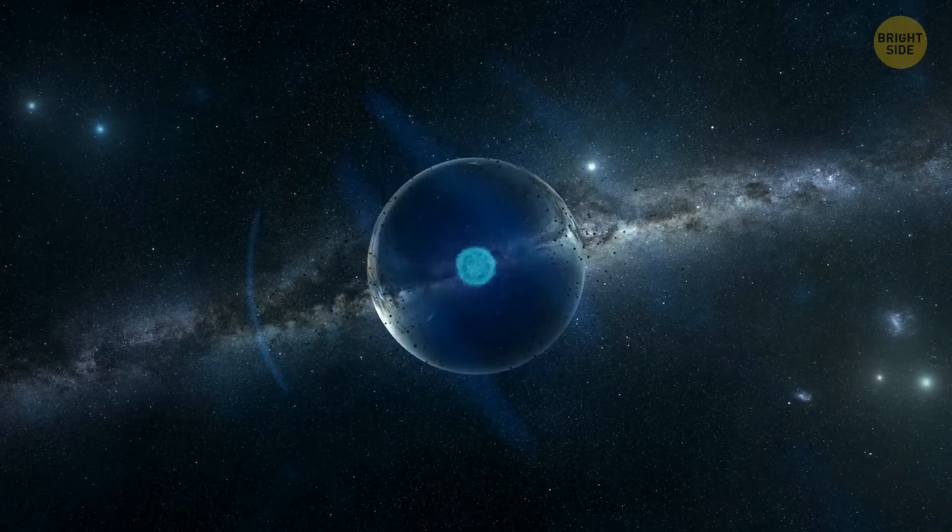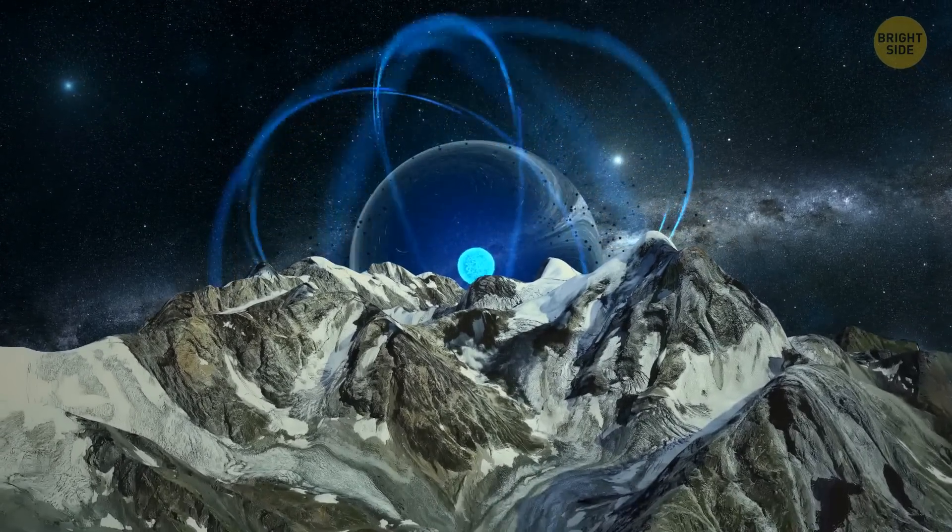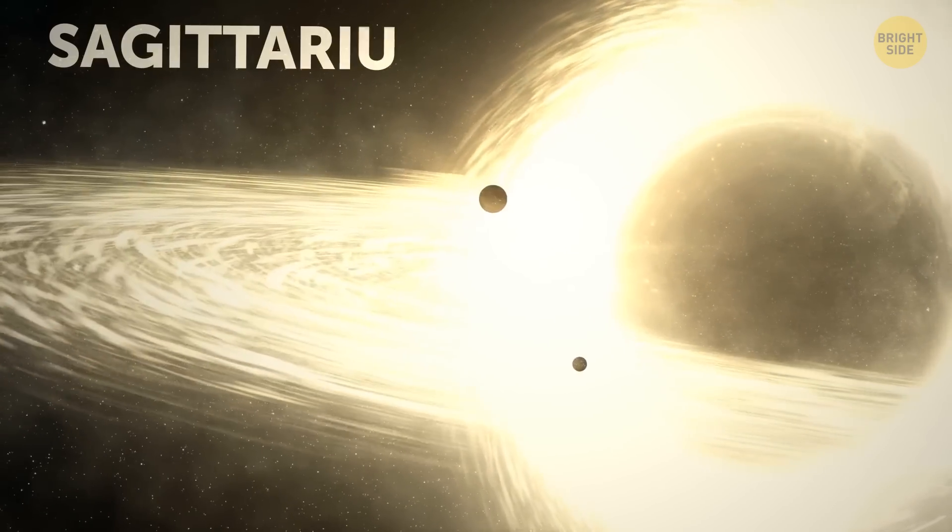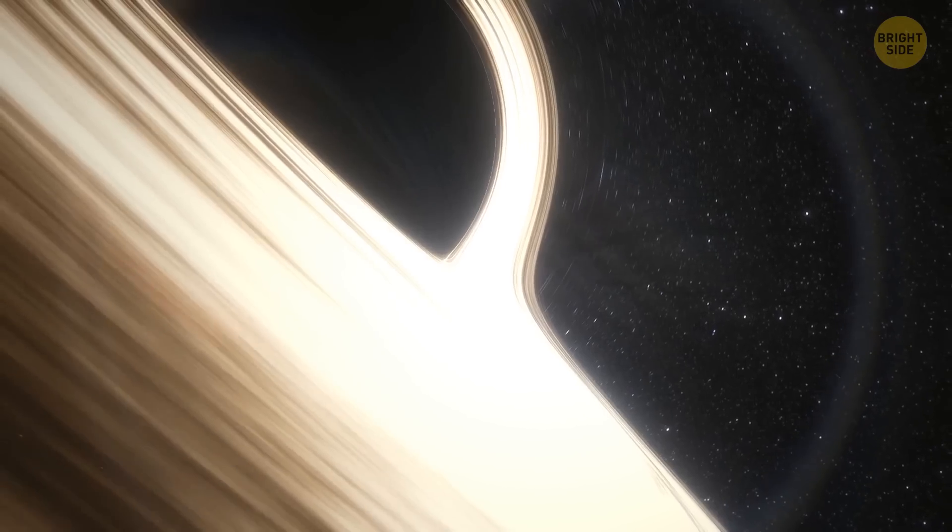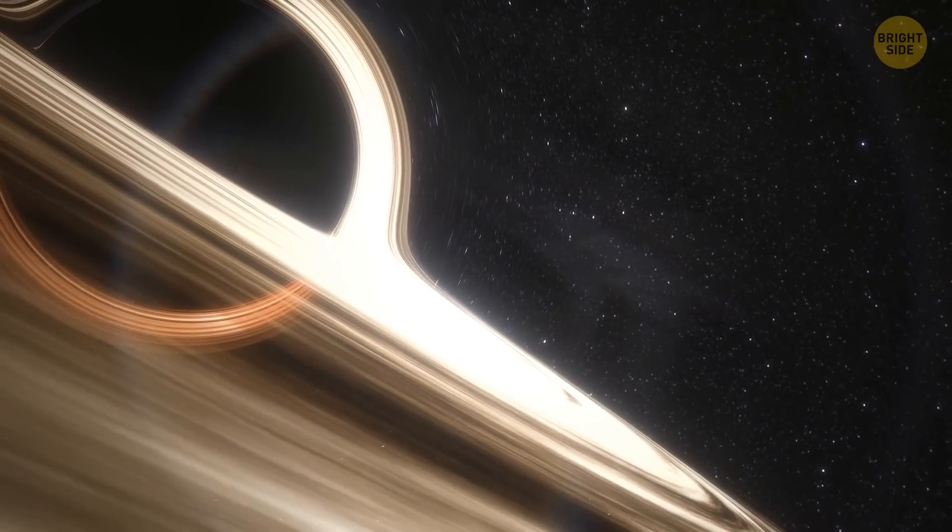Speaking of, a black hole that's as big as a single atom has the mass of a really big mountain. There's one at the center of the Milky Way, called Sagittarius A. It has a mass like for a billion suns, but luckily, it's far away from us.